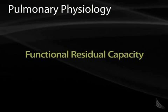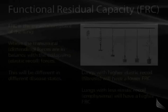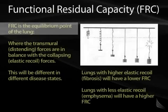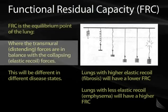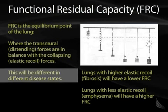FRC is really the equilibrium point of the lung — it's the low volume point of the lung. It's where there's a balance between the transmural distending forces — the blowing up balloon or distending forces — are in balance with the collapsing or elastic recoil forces. And it's going to be different for different disease states.